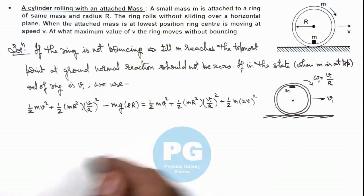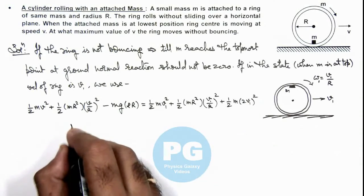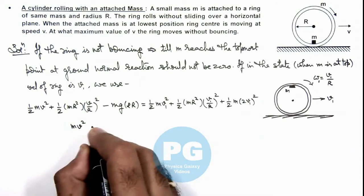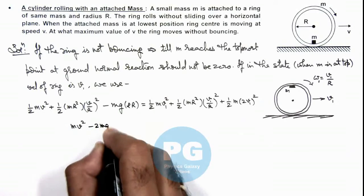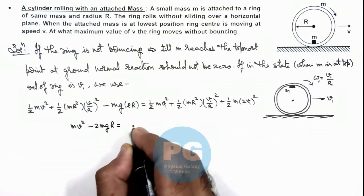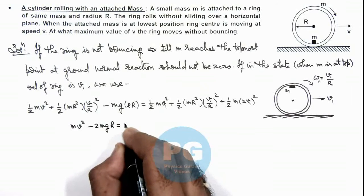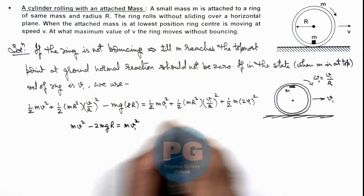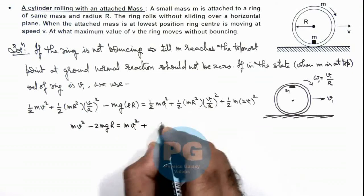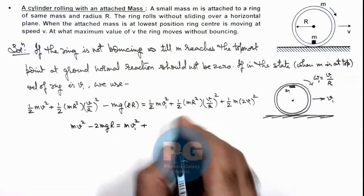If we simplify this relation it gives us mv square minus 2mg R is equal to mv1 square plus this will be 2m v1 square.